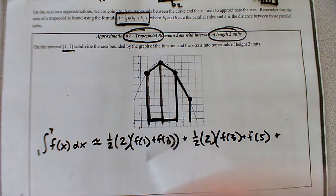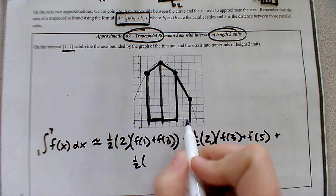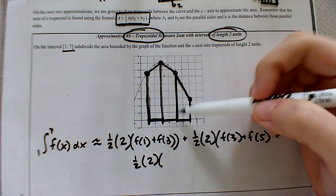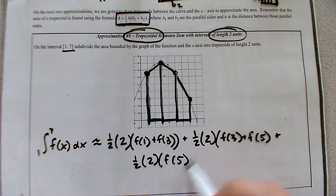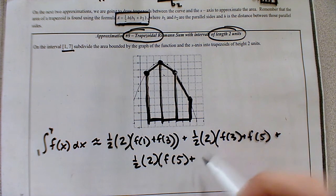And then for the last trapezoid, its height is two, and then the bases came from the x value of five, and the x value of seven.